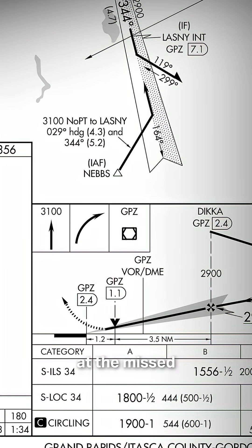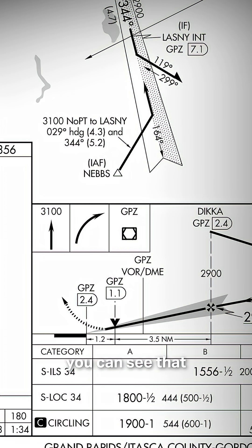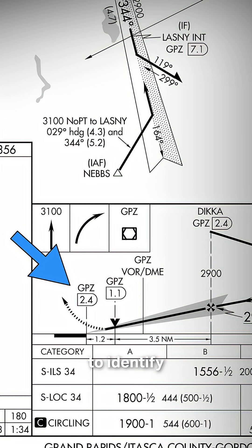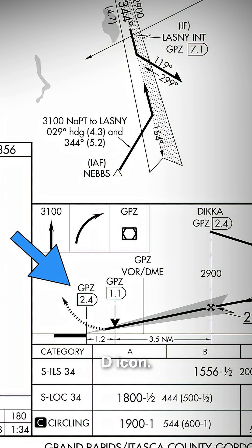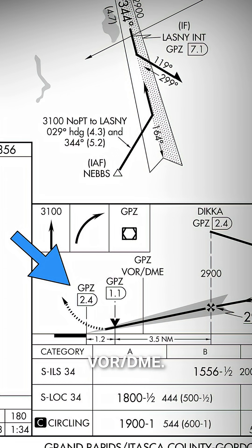If you take a look at the missed approach point for the localizer procedure, you can see that we can use DME to identify that point. We know that because our DME distance is printed inside of the D icon — 2.4 DME from the Grand Rapids VOR DME.